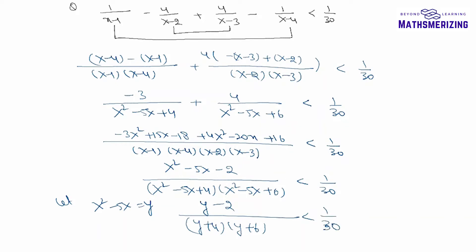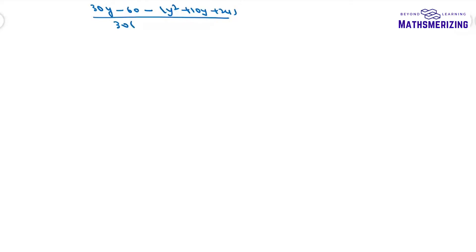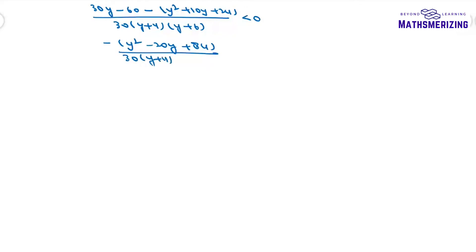Now solve this polynomial inequality in y and then finally get the answer in x. I can write it as (30y - 60 - y² + 10y + 24) / (30(y + 4)(y + 6)) less than 0. Factoring the numerator I get (-y² + 40y - 36) / (30(y + 4)(y + 6)), simplified as minus(20y - 84) divided by 30(y + 4)(y + 6) less than 0.